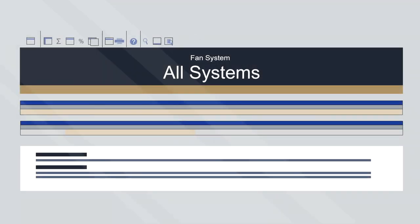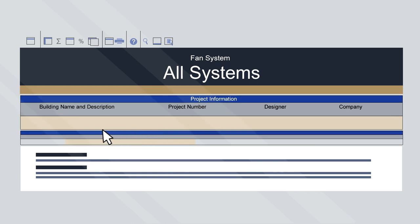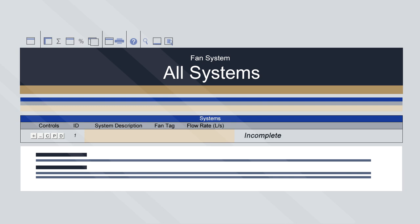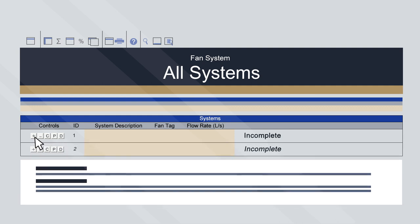When the calculator is opened, the All Systems sheet will appear. The gold shaded cells are input cells. Enter the project information into the cells of the first row. Below that is the Systems section, where each row represents a separate system within the project. This needs to be completed for each fan. The calculator defaults to one row, but additional systems may be added by clicking on the plus icon.